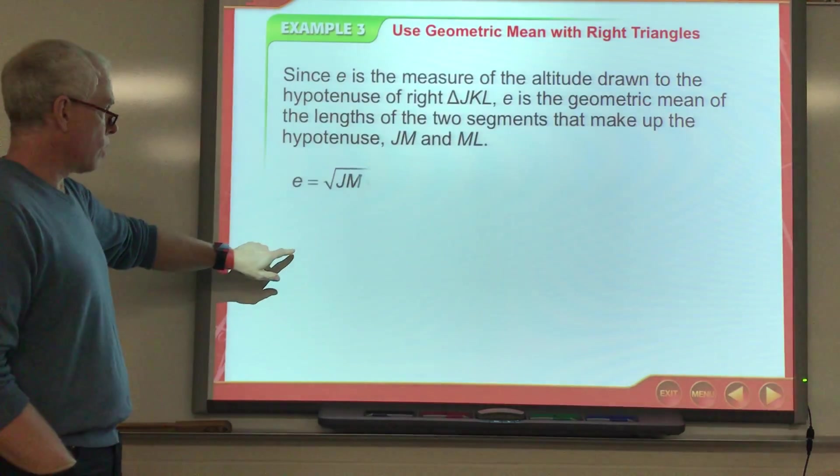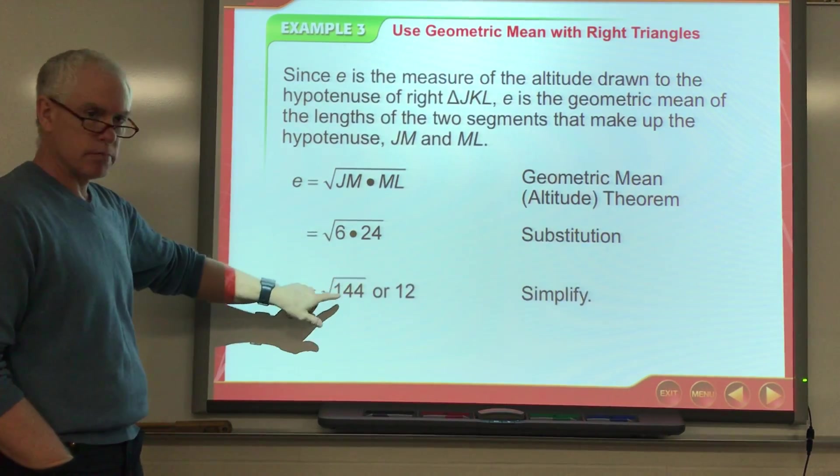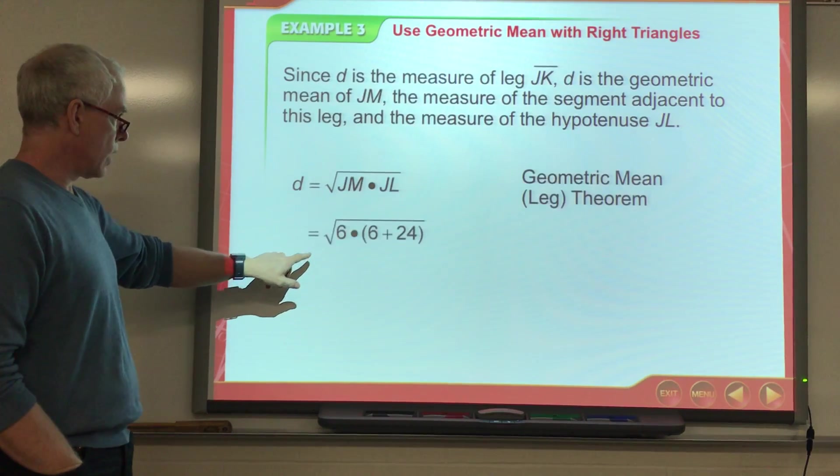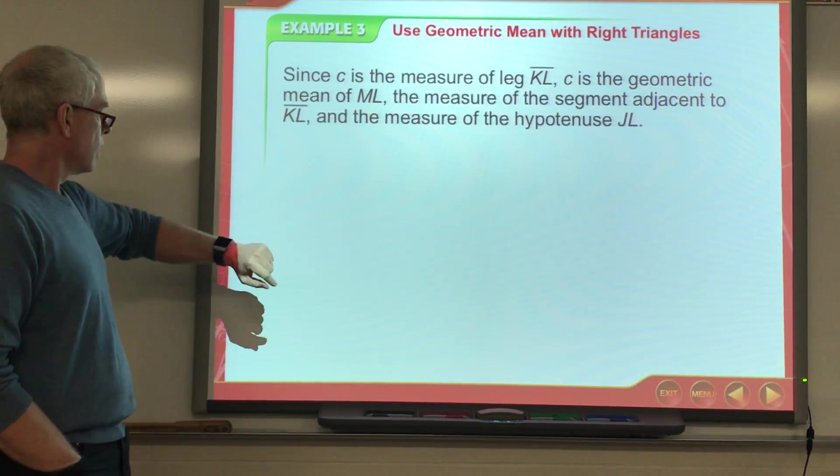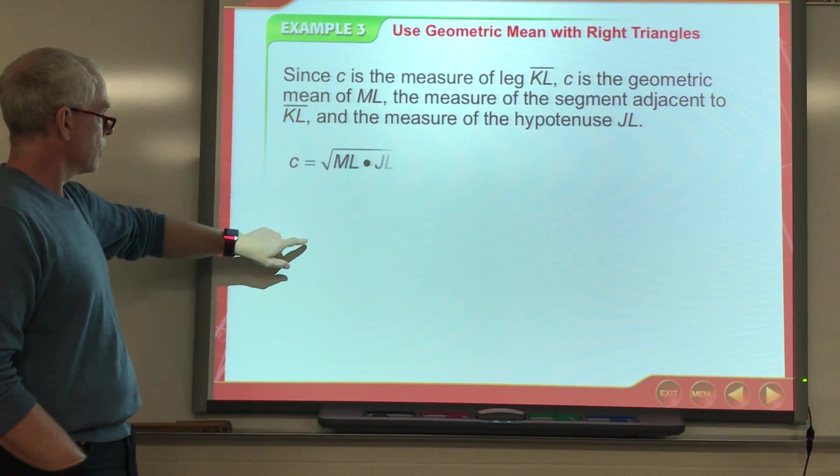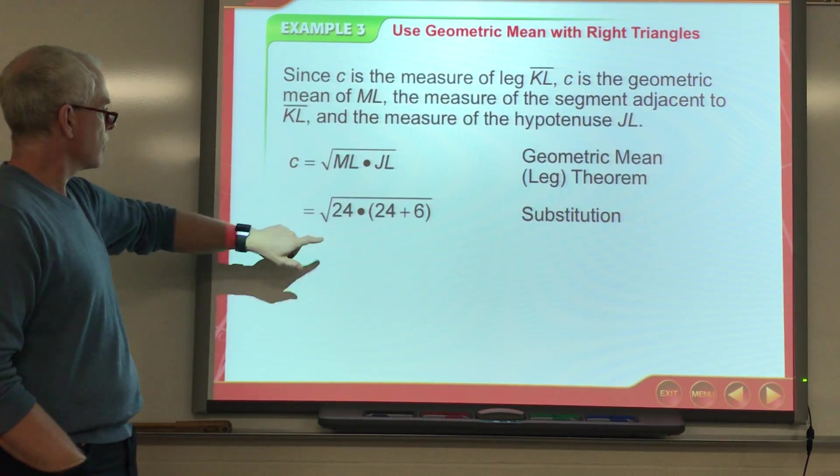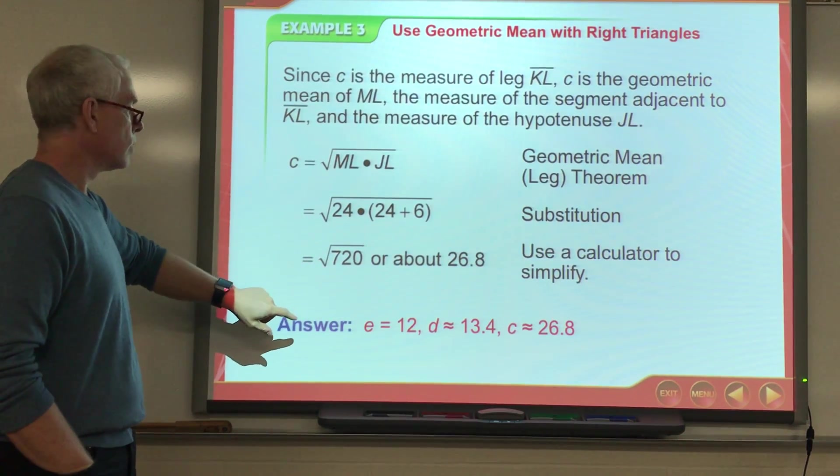Okay. So, they're going to start by solving for E, just like I did. 6 times 24, square root. Okay. Then, they're going to solve for the other two. So, that was 6 times 30. About 13.4. And then, the next one should be 24 times 30. 26.8 or so. Okay.